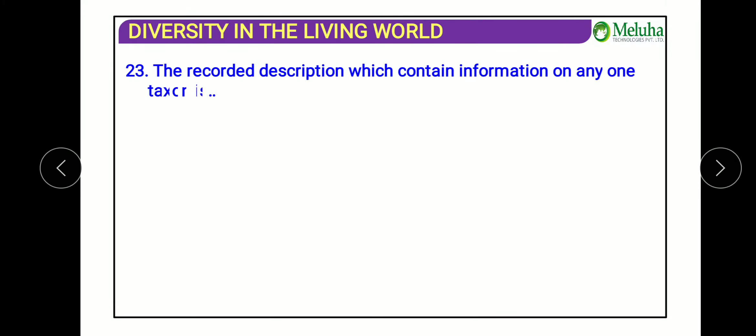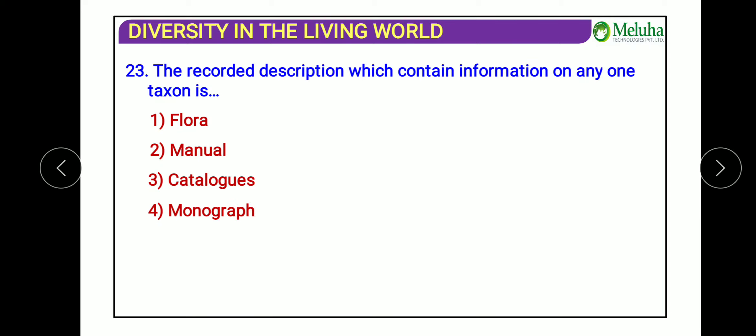The next question: a recorded description containing information of any one taxon is called what? The answer is monograph. 'Mono' means single, and a monograph provides information about a single taxon — whether it is a species, genus, or any other classification category. A taxon is any classification category or rank.